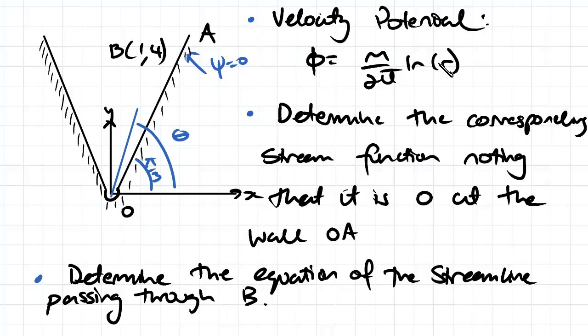What we've been given is the velocity potential, which is equal to m over 2π log r. What we need to do is determine the corresponding stream function, noting that it is zero at the wall OA, and then we also want to determine the equation of the streamline passing through B.